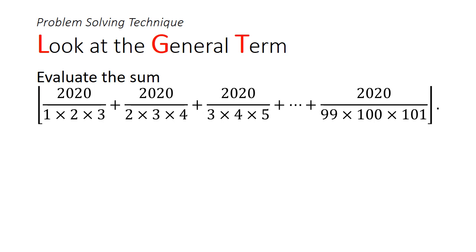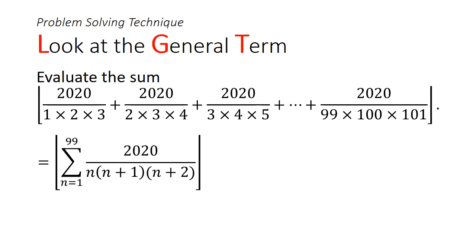There are three parts to this problem. First, work out the general term. Second, express it as a sum of partial fractions. Third, use telescopic sum to get terms to cancel. The general term is 2020 divided by n(n+1)(n+2), summed from n=1 to n=99.